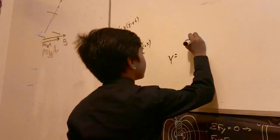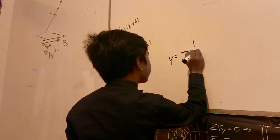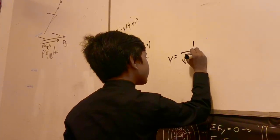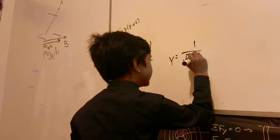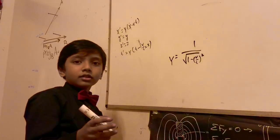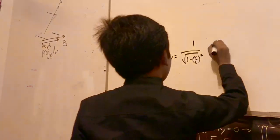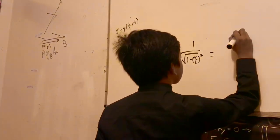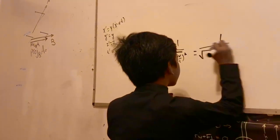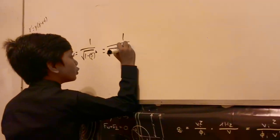Because the gamma is equal to 1 over square root of 1 minus V over C whole squared. So now, the thing is, if you set V equal to C, that's going to give you 1 minus 1 squared.